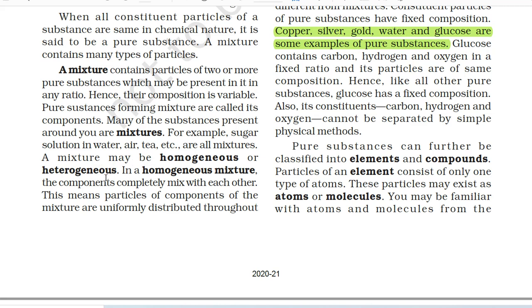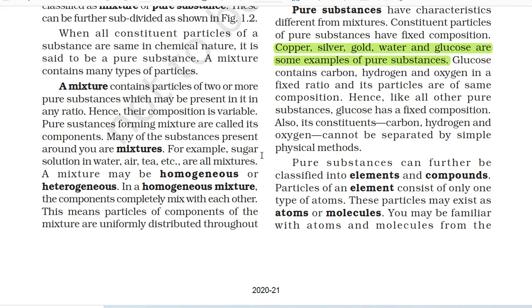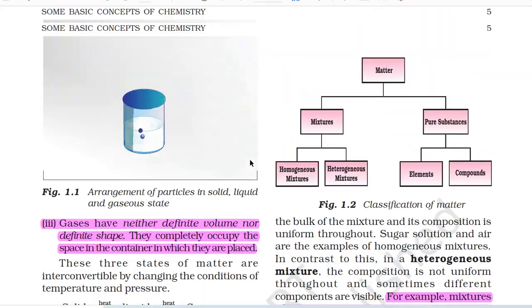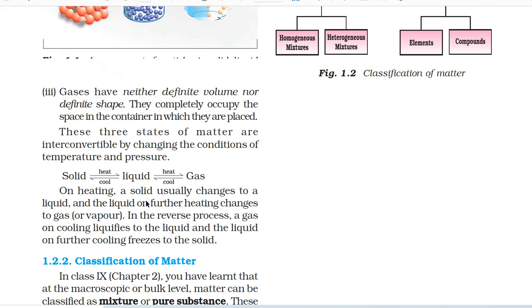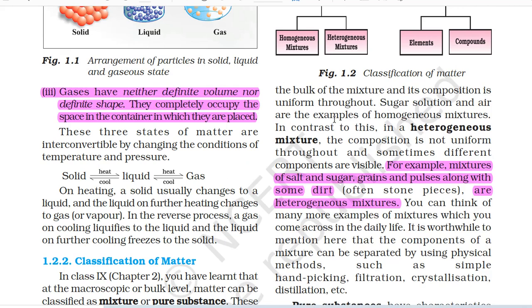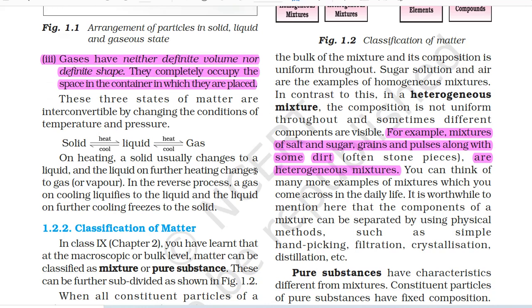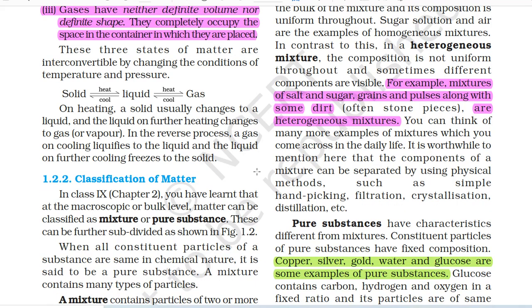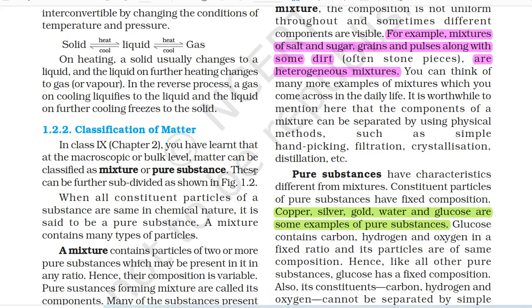A mixture may be homogeneous or heterogeneous. In a homogeneous mixture, the components completely mix with each other — particles are uniformly distributed throughout the bulk of the mixture and its composition is uniform throughout. Sugar solution and air are examples of homogeneous mixtures. In a heterogeneous mixture, the composition is not uniform throughout and sometimes different components are visible. For example, mixtures of salt and sugar, grains and pulses along with some dirt are heterogeneous mixtures.